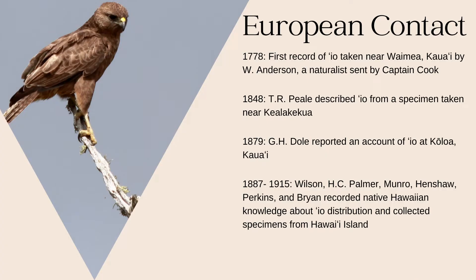Europeans came to Hawai'i in the late 1700s with Captain Cook, and in 1778, the first record of EO was taken near Waimea, Kauai, by W. Anderson, who was a naturalist sent by Captain Cook. Over the next hundred or so years, Western naturalists wrote and observed and took collections of EO. In 1848, the scientific description was written from a specimen taken near Kealakekua.